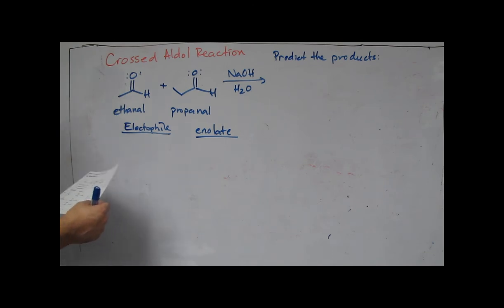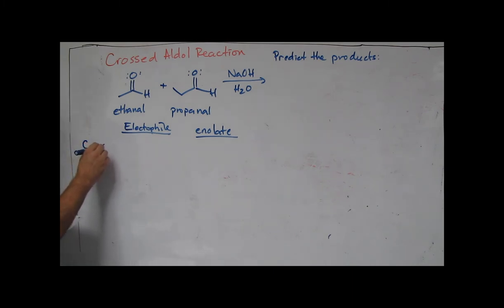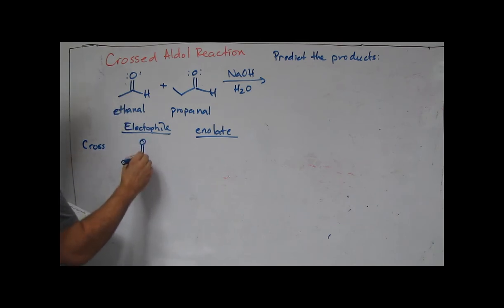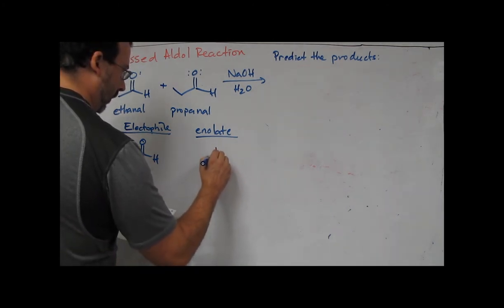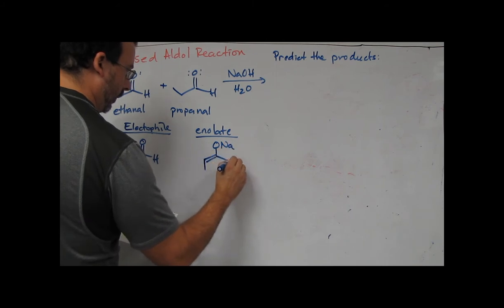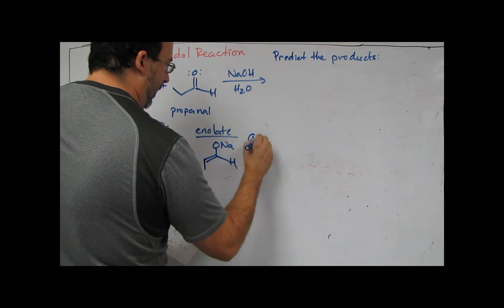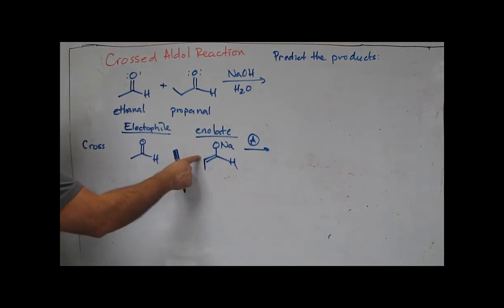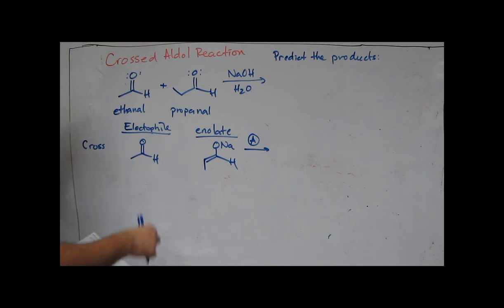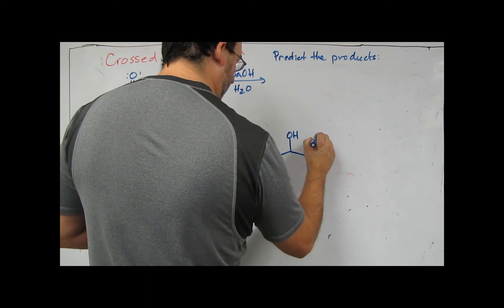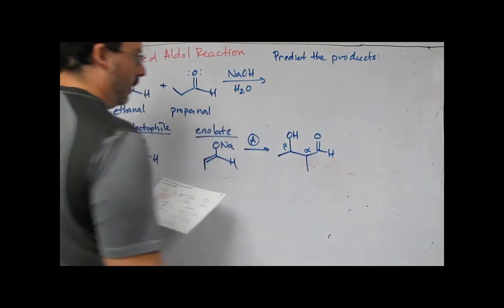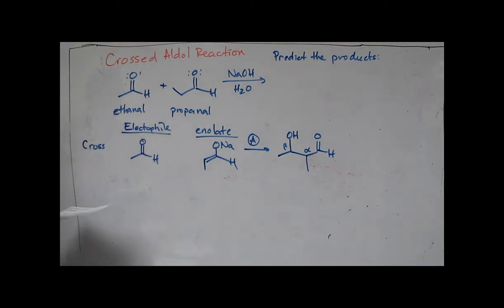Let's look at the crossed products first. Starting with ethanal as the electrophile, we'll generate the enolate from propanal — that's going to give product A. The alpha carbon is the nucleophile attacking the carbonyl carbon of the electrophile. The general product is a beta-hydroxyaldehyde. So there's crossed product number one, labeled A.